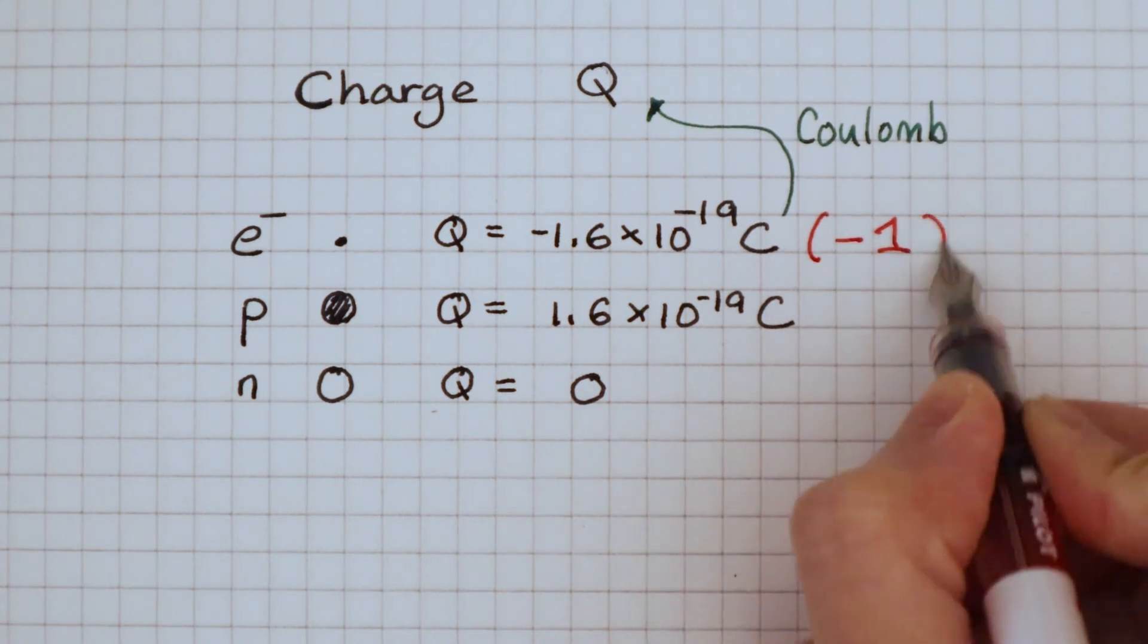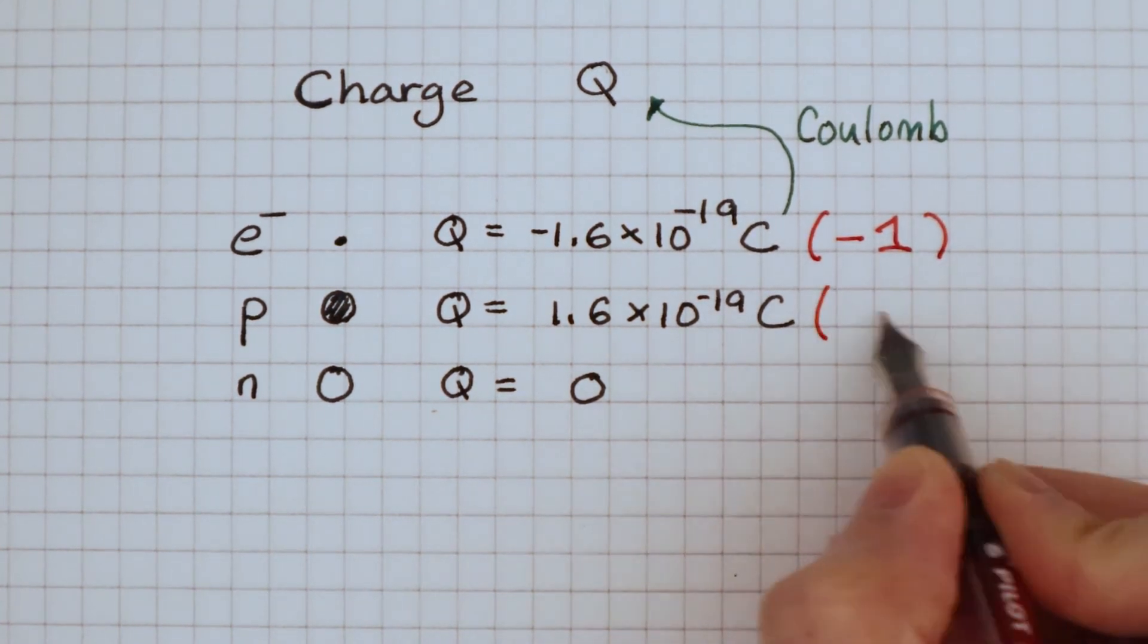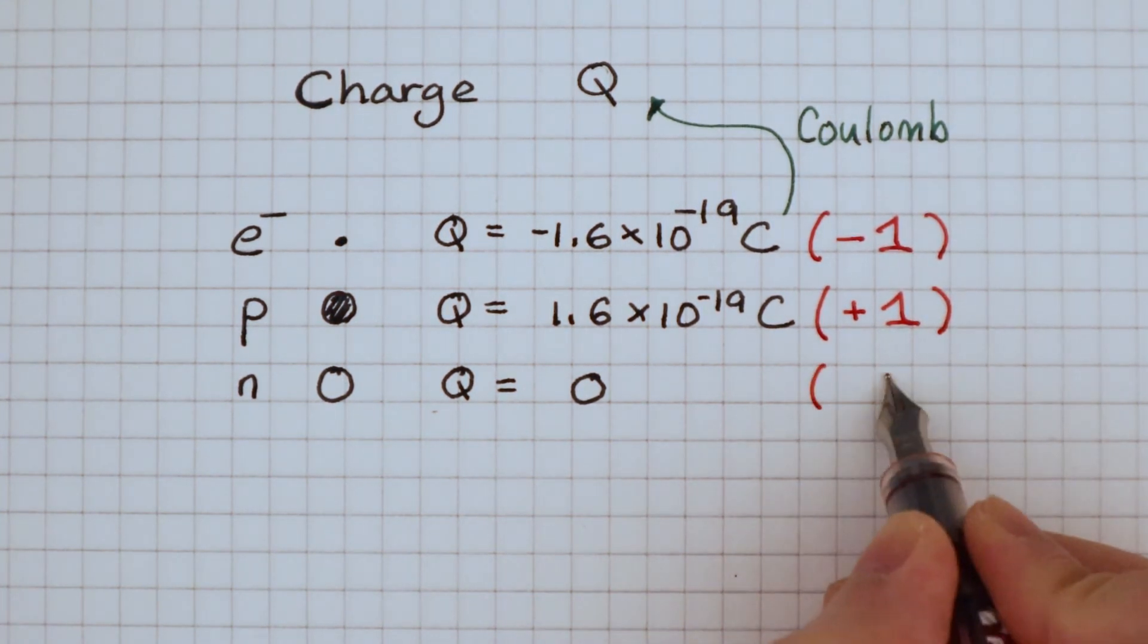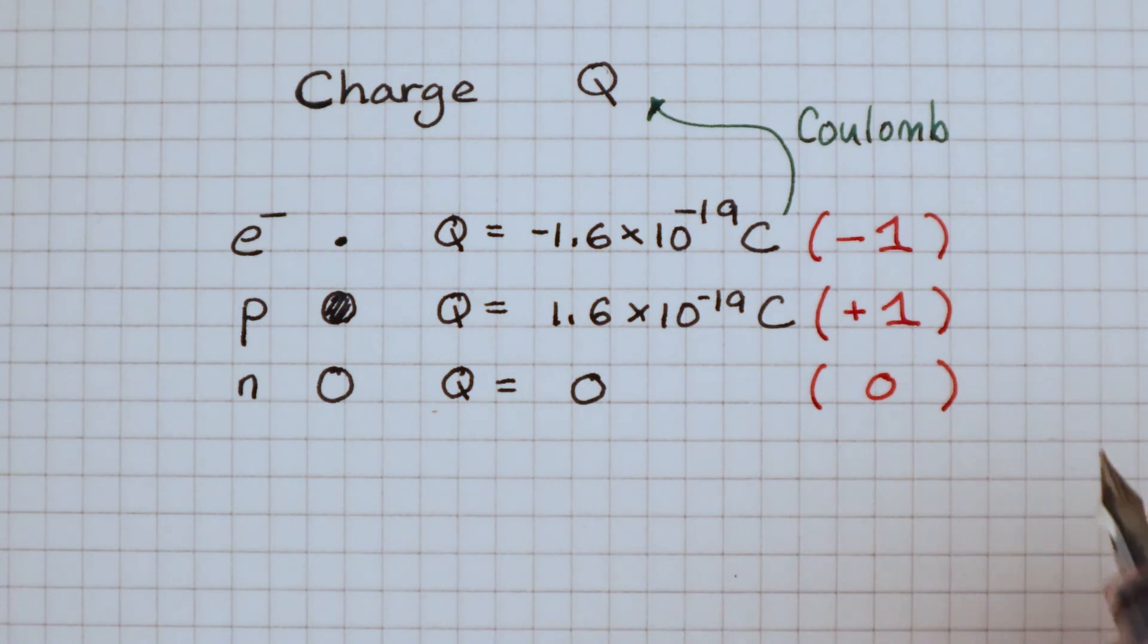An electron has a relative charge of minus 1, but a proton has a relative charge of plus 1. A neutron doesn't have any charge, so its relative charge is just 0.